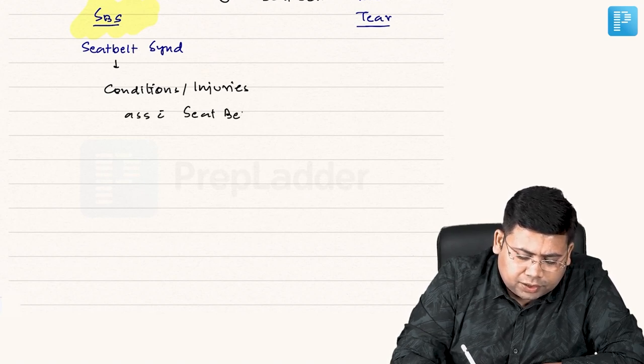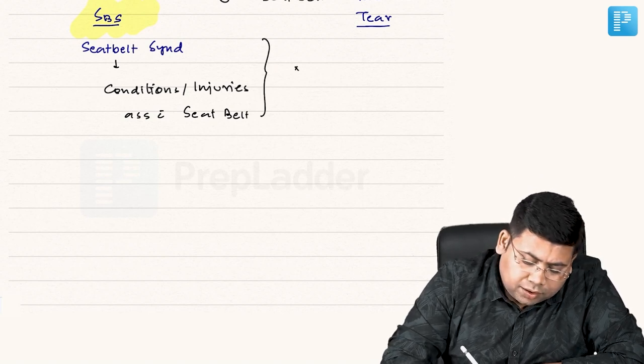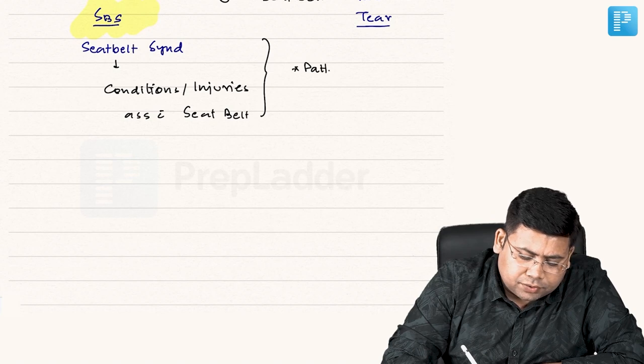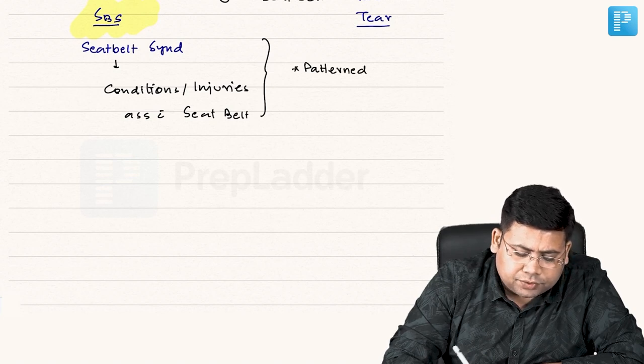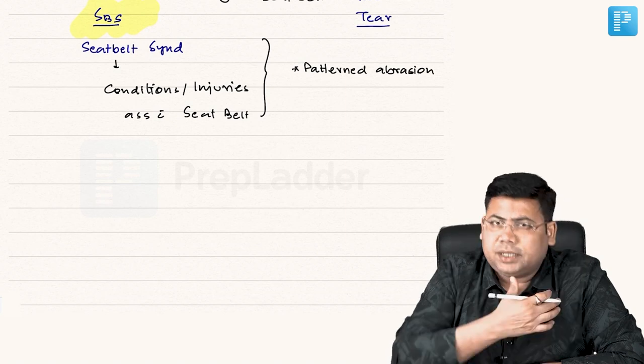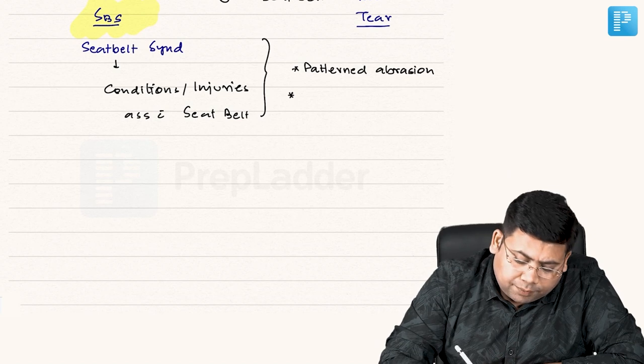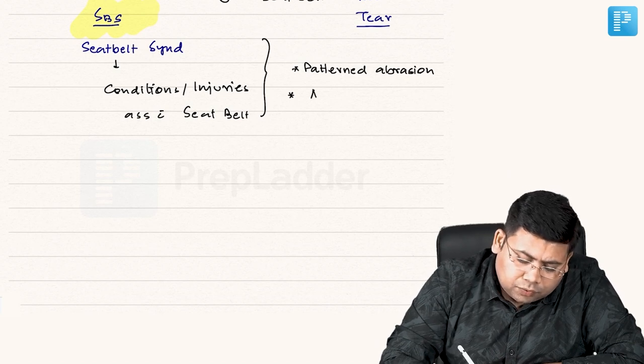What are they? Let us try to understand. They include a patterned abrasion - the abrasion has that pattern of the seat belt imprinted on it. This patterned abrasion can be associated with aortic injury.